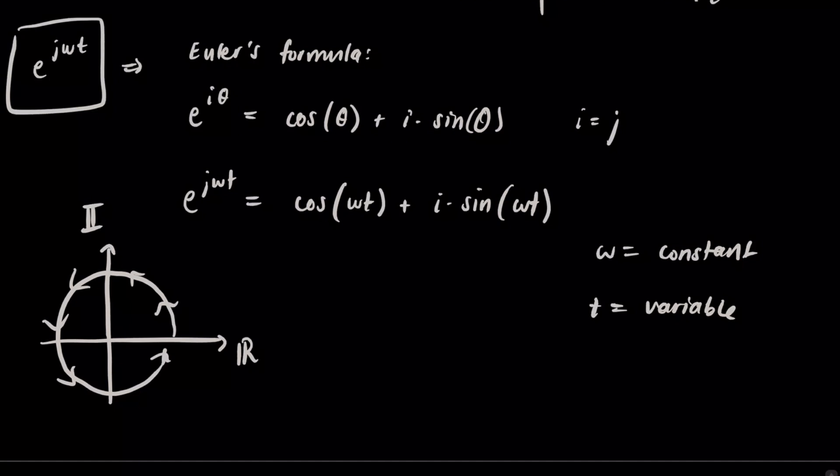And over time, if you plotted this like e to the j omega t versus t, you end up with a sinusoid. Obviously, if you take the real part, the real part of e to the j omega t, and actually it's a cosine, so let's move that over.